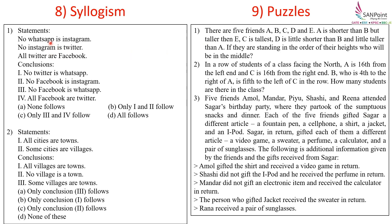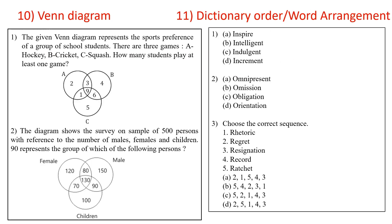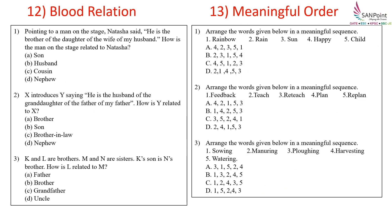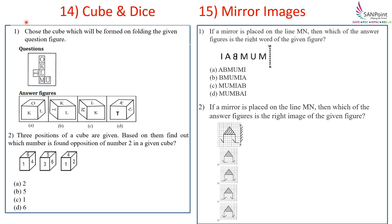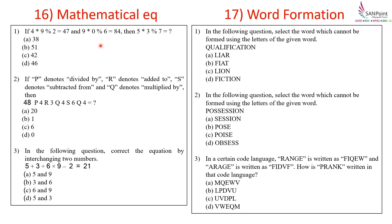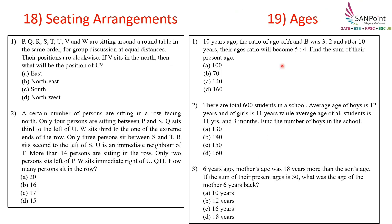Next is Syllogism, then Puzzles, then Venn Diagram — which is a very important topic in this subject. Next are Dictionary Order word arrangement questions, Blood Relationship, Meaningful Order questions, Cubes and Dices, Mirror Images, Mathematical Equations, Word Formation, and Seating Arrangement.